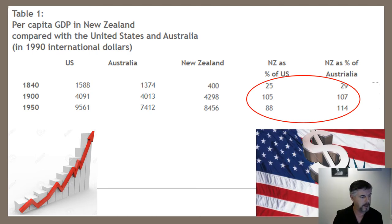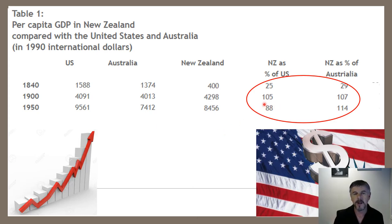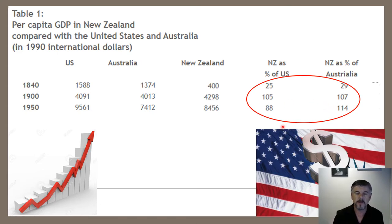Looking at the figures, the US had gone on to become a superpower, making it hard for New Zealand to keep up, yet we were nearly 90% of the US in per capita GDP — an absolutely phenomenal performance. And against Australia we had gone to 114%, further ahead. This really was marvellous performance by New Zealand — something not celebrated but something we have every right to be proud of.